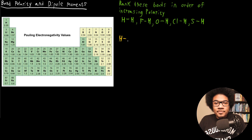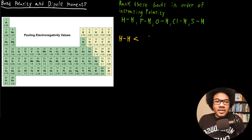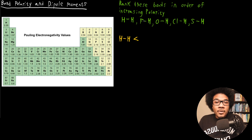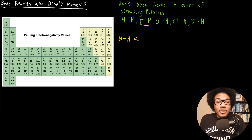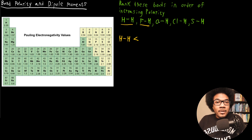Looking at these bonds, one thing we know for sure is that the lowest, most non-polar bond is HH, so we put that first. Everything else after this would be an increase in polarity. We also know that HF is going to be the largest, since fluorine is the most electronegative atom on the periodic table — it's going to love to grab electron pairs, so that bond will have the highest polarity. So really, ranking these comes down to making sense of OH, ClH, and SH.